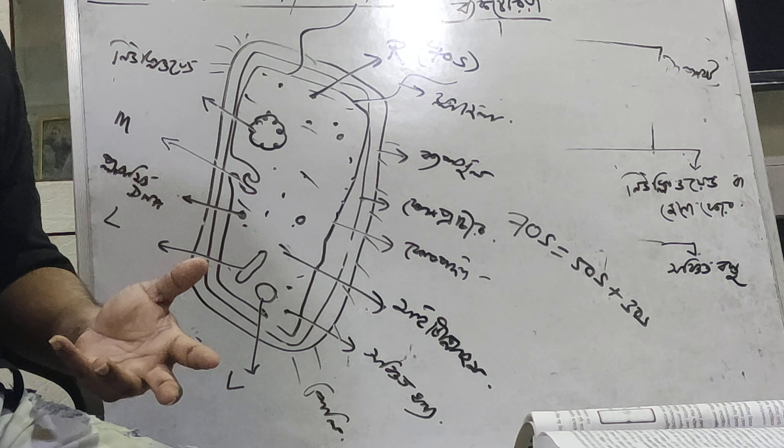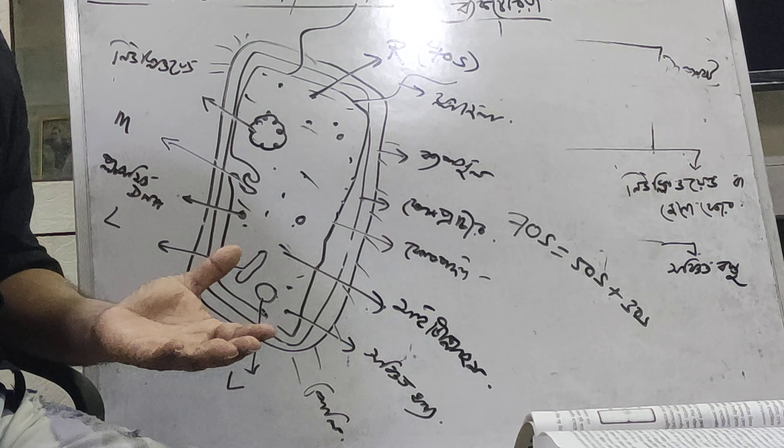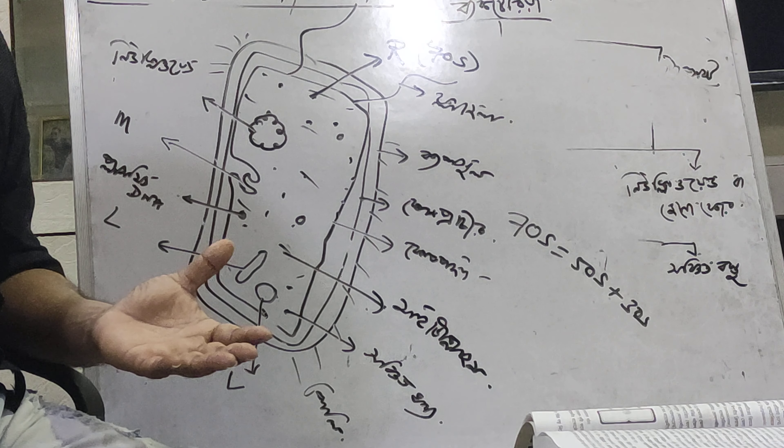This is a plasmid DNA, which is a P-plasmid DNA. This is an antibiotic DNA. This plasmid DNA is divided into T1.